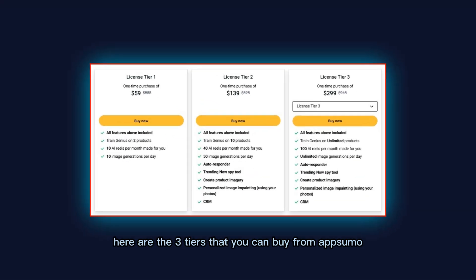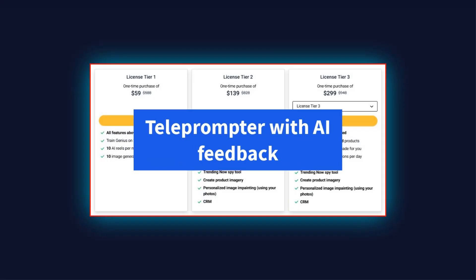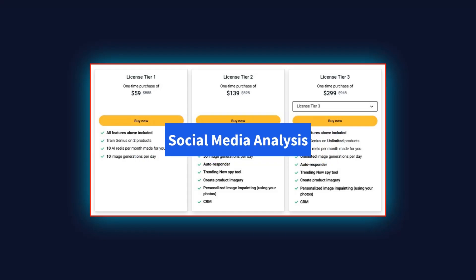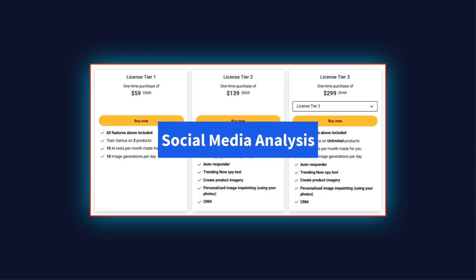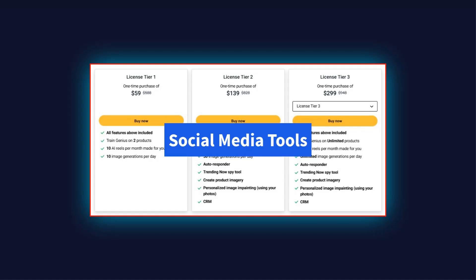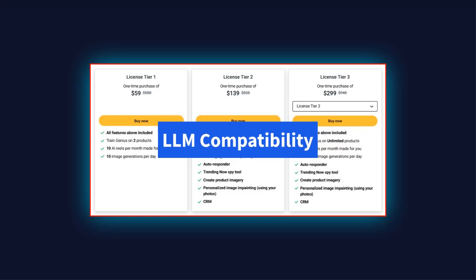Here are the three tiers that you can buy from AppSumo. Features included in all plans: teleprompter with AI feedback, social media analysis, browser integration, growth formulas, social media tools, and LLM compatibility.